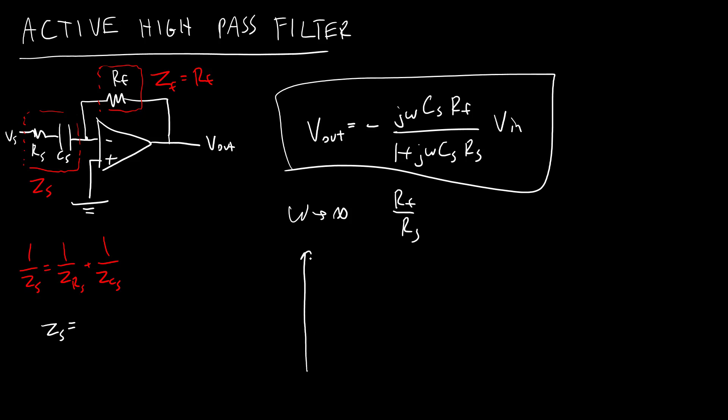And again, if you look at a graph of the frequency response where for a passive low-pass filter, the ratio of output to input, the magnitude of that was never going to exceed 1. For an active high-pass filter, you can get a gain of greater than 1 by your choice of these resistor values.